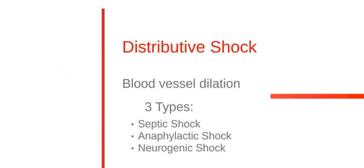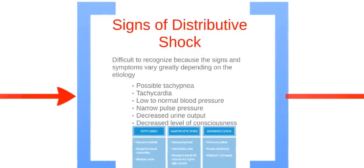The last type of shock is distributive shock, which occurs when blood vessels are dilated. There are three types: septic, anaphylactic, and neurogenic. The signs of distributive shock are difficult to recognize because they vary greatly depending on the etiology. Possible signs include tachypnea, tachycardia, low to normal blood pressure, a narrow pulse pressure, decreased urine output, and decreased level of consciousness.